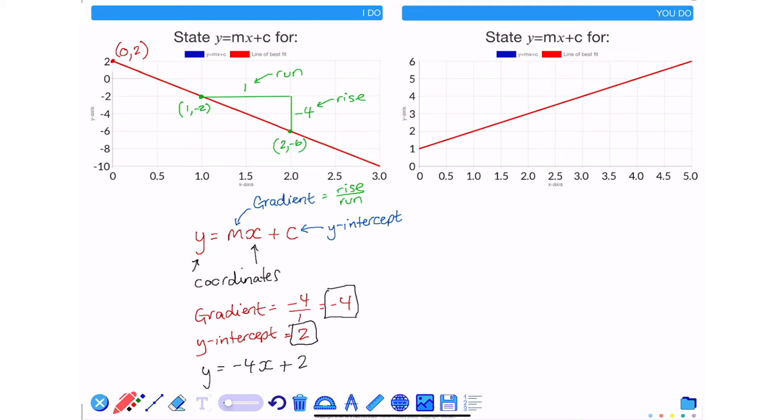So I now know that there are two things I need to calculate in order to state the equation of a straight line. The first might be the y-intercept. The y-intercept is the point where it crosses the y-axis and it has a coordinate of 0, 1. The value of c is 1.